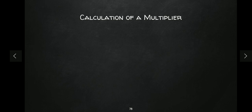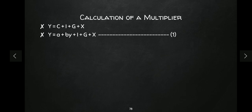In the four-sector economy, equilibrium is attained at Y = C + I + G + X. That is the equation. We can write C as a + bY, and this I am going to mark as equation one.